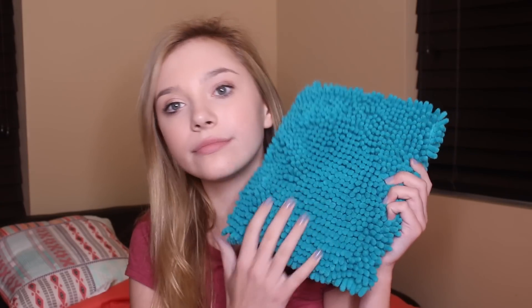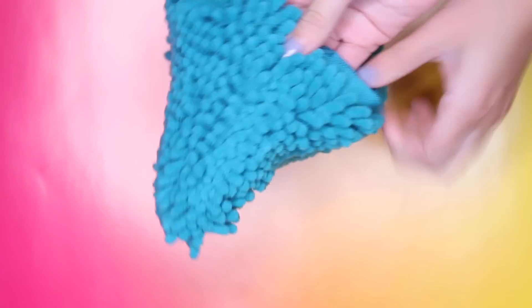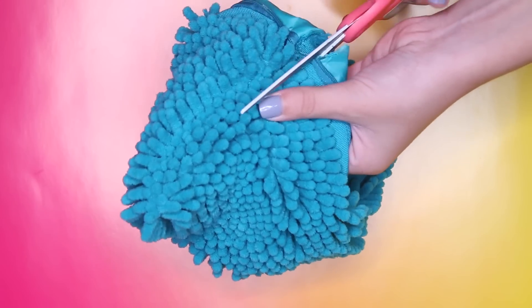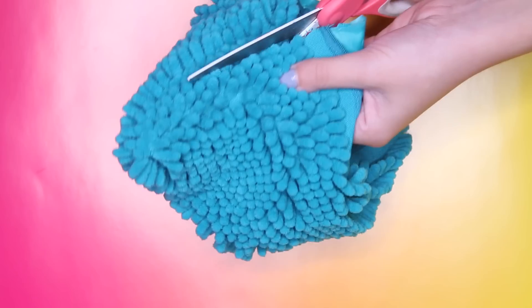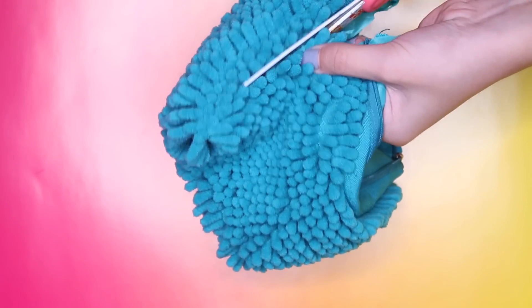To start off the DIY pillow notebook, all you'll need is this furry pencil pouch. I got mine from Target but you can honestly use whatever you'd like. It doesn't even need to be a pencil pouch but I feel like this made it a lot easier. So all I did was cut down the sides of the pencil pouch, and then I cut out the material on the inside.